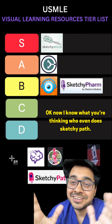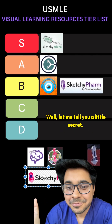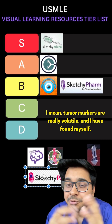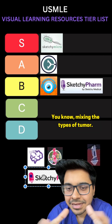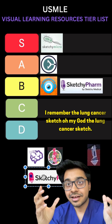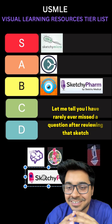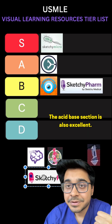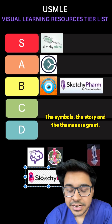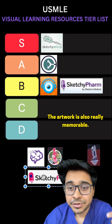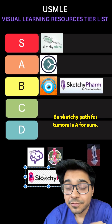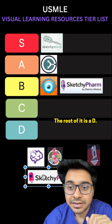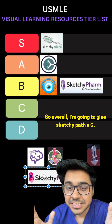Sketchy Path — I know what you're thinking: who even does Sketchy Path? Let me tell you a little secret: Sketchy Path is the best way to do tumors. Tumor markers are really volatile and I've always found myself mixing types of tumors. After doing Sketchy Path, I remember the lung cancer sketch and I have rarely ever missed a question after reviewing it. The acid base section is also excellent — the symbols, story, and themes are great, and the artwork is memorable. Sketchy Path for tumors is an A, and the skin cancer sketch is excellent too. The rest of it is a D, so overall I'm giving Sketchy Path a C.